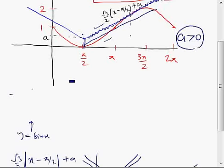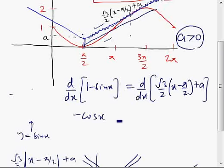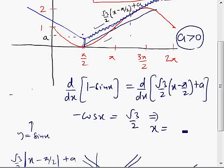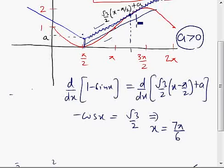Setting the slope of one minus sin x equal to the slope of root 3 by 2 times (x minus pi by 2) plus a: the derivative of one minus sin x is minus cos x, and the slope of the line is root 3 by 2. Solving minus cos x equals root 3 by 2 gives x equal to 7pi by 6. So this is the point where the two curves touch. The x-coordinate of point P is 7pi by 6, and substituting into one minus sin x gives the y-coordinate as 3 by 2, since sin(7pi/6) equals minus 1/2.